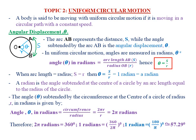When we talk of Uniform Circular Motion, 'uniform' simply means that the speed of the motion has to be constant or uniform. Circular Motion is simply the motion of a body in a circular path — for example, a car going around a circular bend. A body is said to be moving with uniform circular motion if it is moving in a circular path with a constant speed that does not change with time.